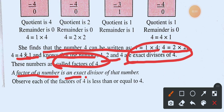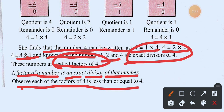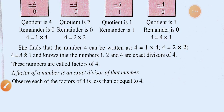A factor of a number is an exact divisor of that number. Observe that each of the factors of four is less than or equal to four. This is an important property to observe.